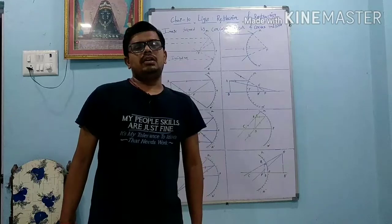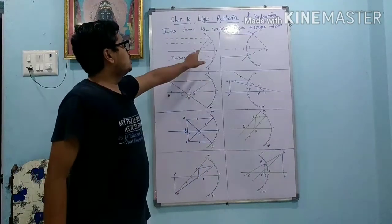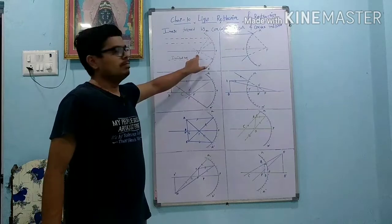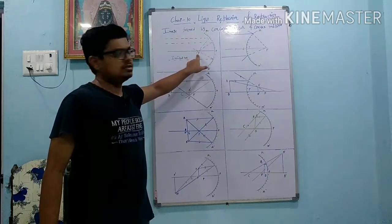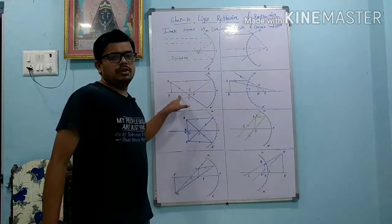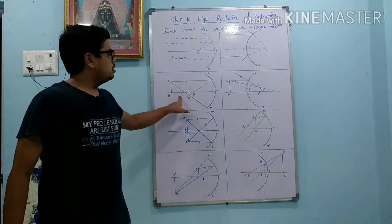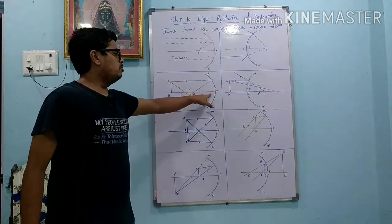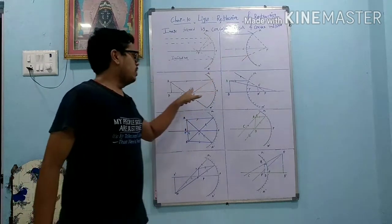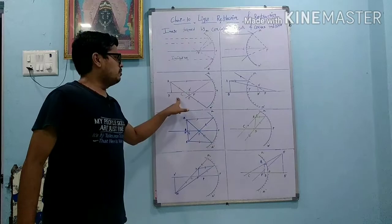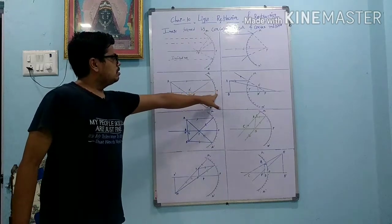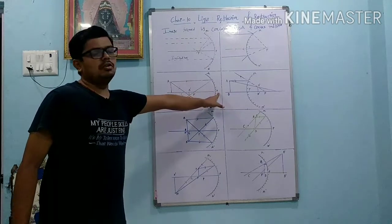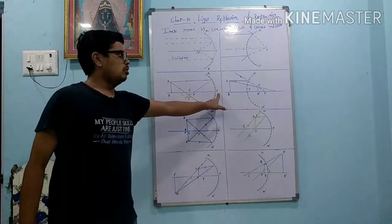Last time we learnt about Principal Focus - the point at which all the rays meet is called Principal Focus. Centre of Curvature - the centre of a spherical mirror, whether concave mirror or convex mirror, is called Centre of Curvature. Pole - the centre of the concave mirror or convex mirror is called Pole.